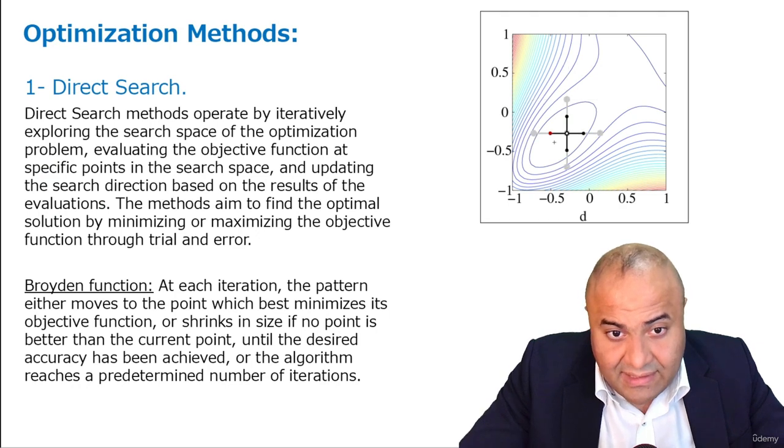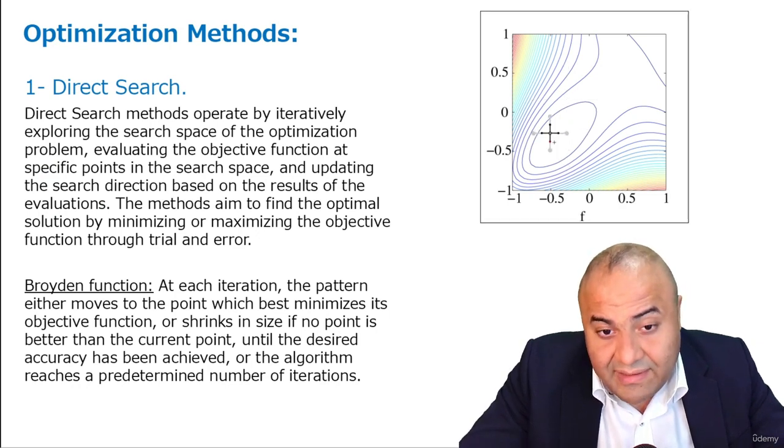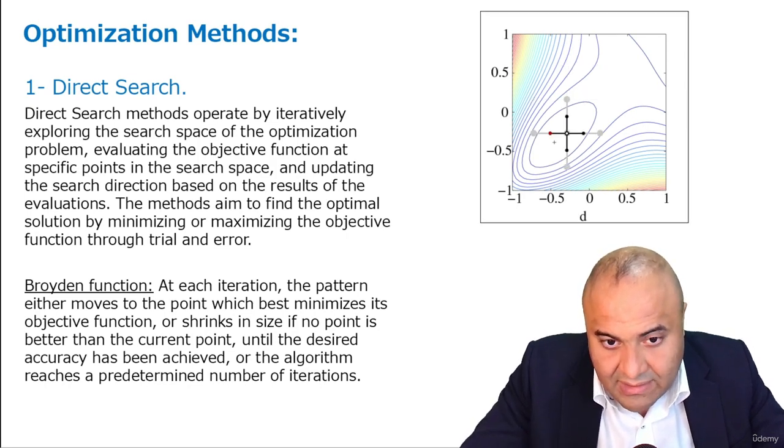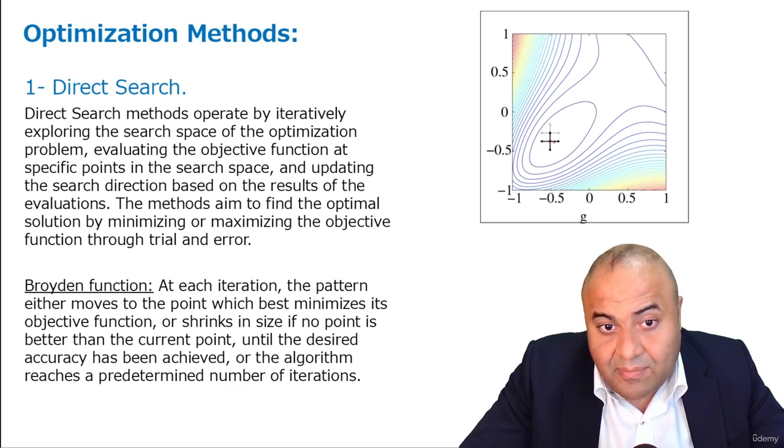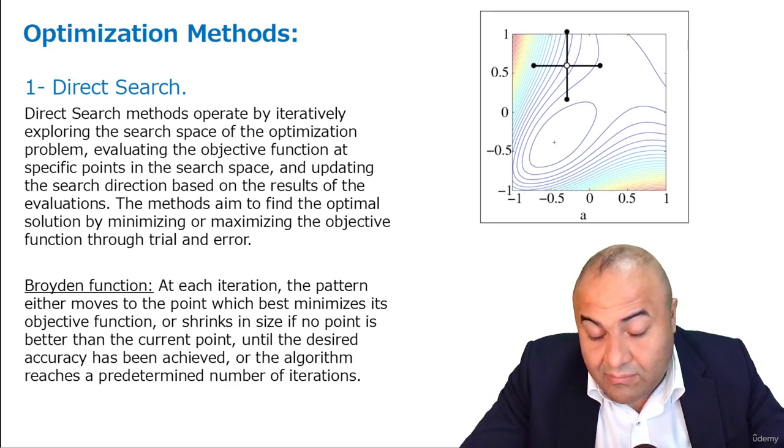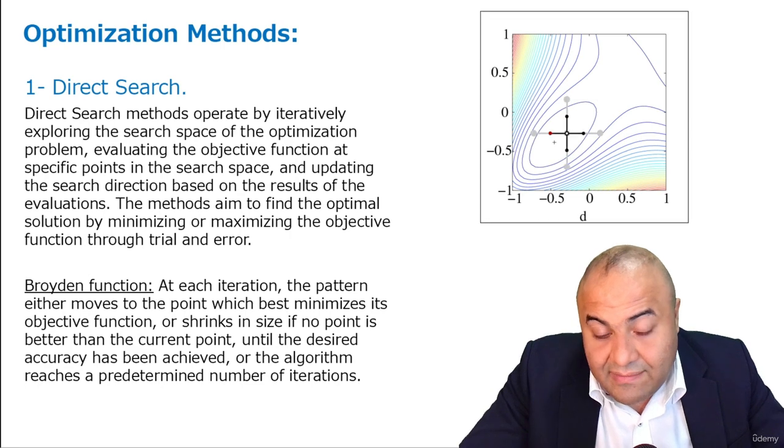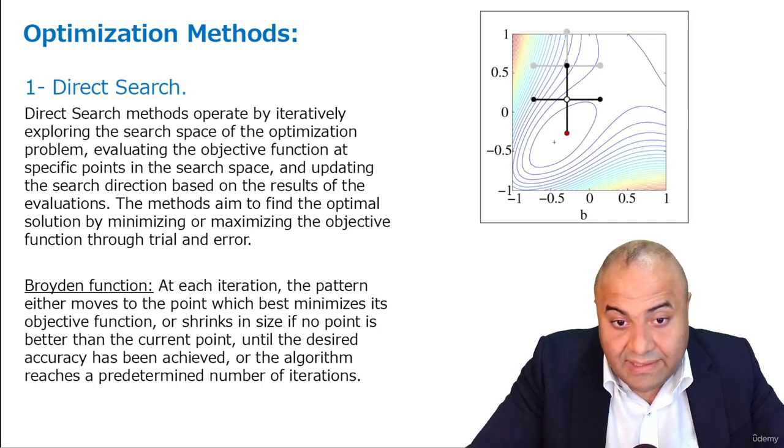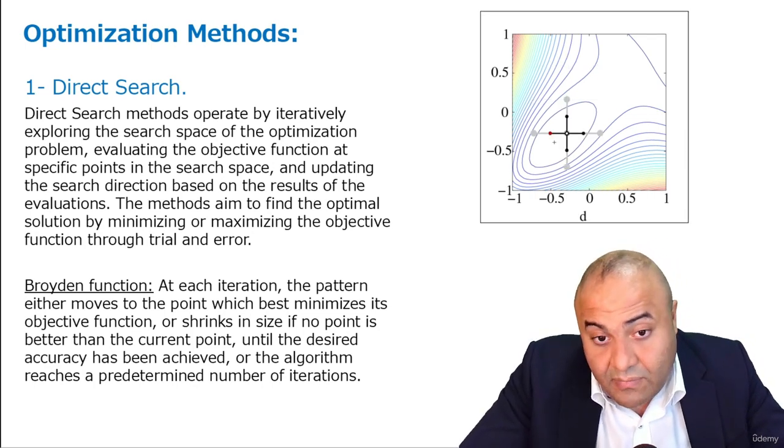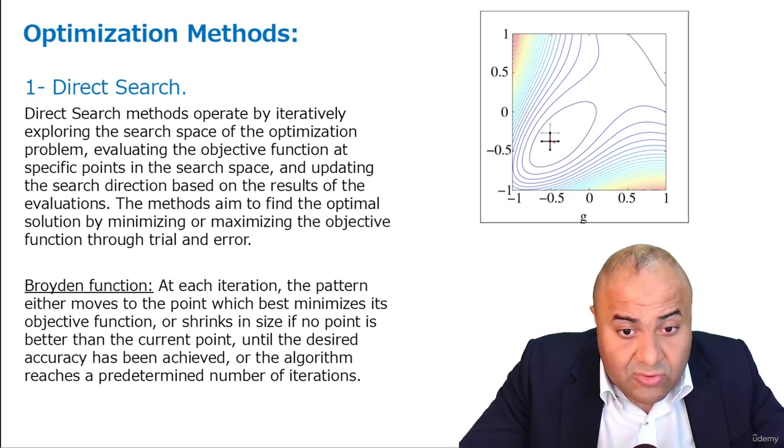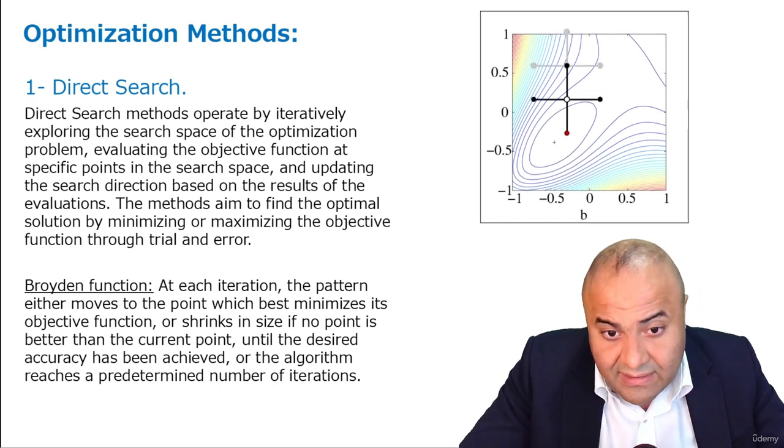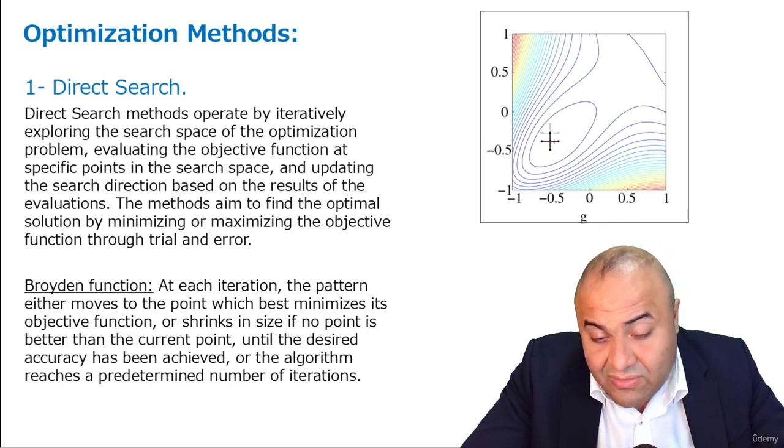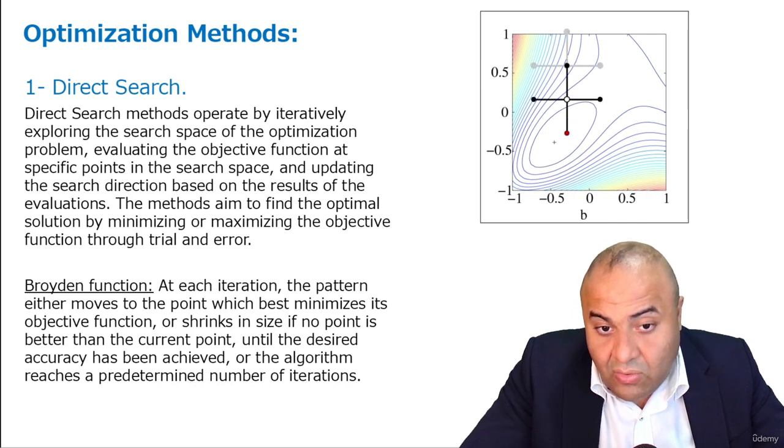The first method is direct search. In direct search, we search through our possible solutions by having, similar to a cursor, and finding the values at the top of this search cursor. We find these values and compare them and move the cursor towards the location or the value or the direction of the lower values.